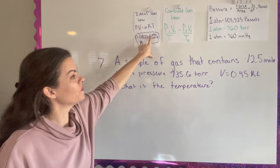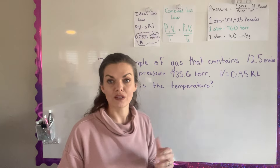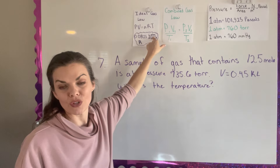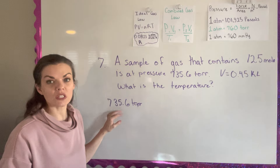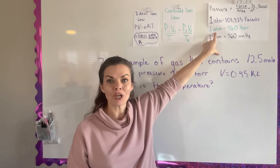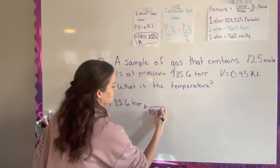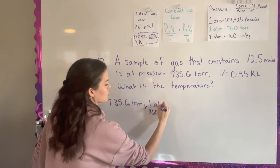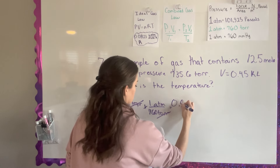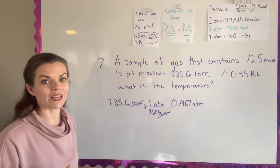From this problem I need liters, not kiloliters, and I also need pressure in atmospheres. Let's do the pressure first: starting with 735.6 torr, and remembering that one atmosphere equals 760 torr, I use the factor label method — torr on the bottom, atmospheres on top. Torrs cancel out and I get 0.967 atmospheres.